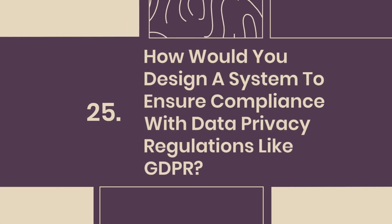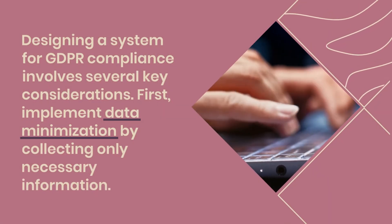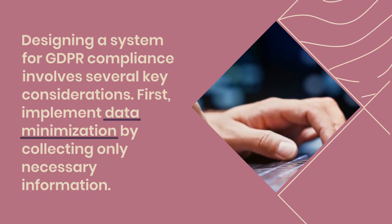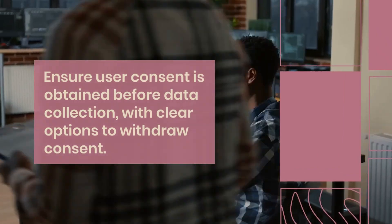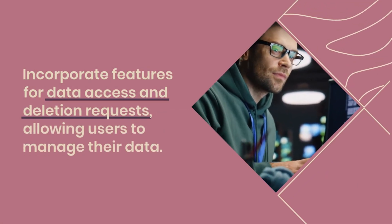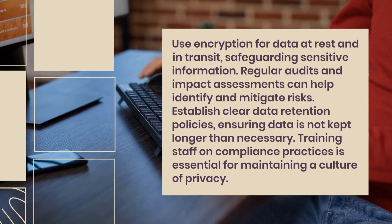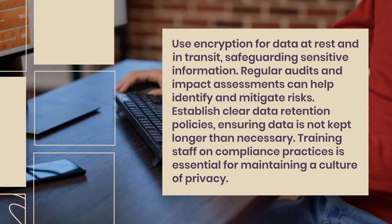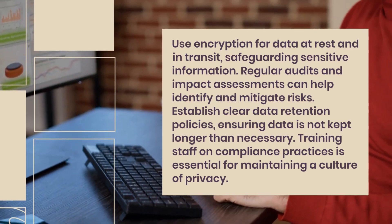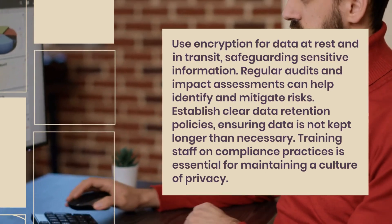Question 25: How would you design a system to ensure compliance with data privacy regulations like GDPR? Designing a system for GDPR compliance involves several key considerations. First, implement data minimization by collecting only necessary information. Ensure user consent is obtained before data collection, with clear options to withdraw consent. Incorporate features for data access and deletion requests, allowing users to manage their data. Use encryption for data at rest and in transit, safeguarding sensitive information. Regular audits and impact assessments can help identify and mitigate risks. Establish clear data retention policies, ensuring data is not kept longer than necessary. Training staff on compliance practices is essential for maintaining a culture of privacy.